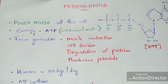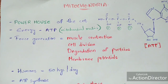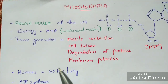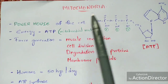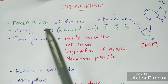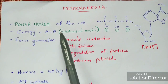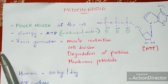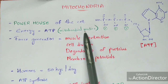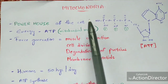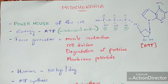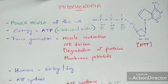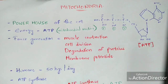Coming to the introduction part of the mitochondria — from childhood we know that mitochondria is called as the powerhouse of the cell. It is called so because it mainly helps in the generation of ATP, and this ATP energy is mainly formed at the site of the mitochondrial matrix present in the mitochondria.